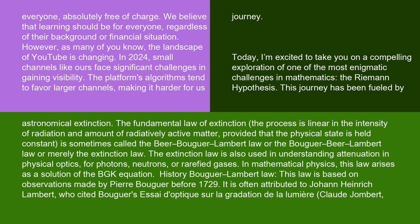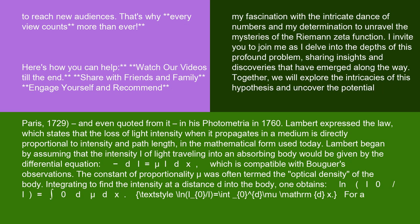History: Bouguer-Lambert Law. This law is based on observations made by Pierre Bouguer before 1729. It is often attributed to Johann Heinrich Lambert, who cited Bouguer's Essay d'Optique sur la gradation de la lumière, Paris 1729,